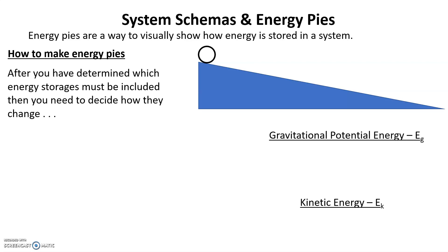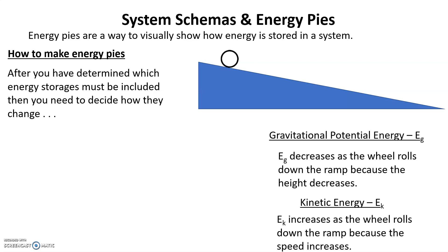After we determine which energy storages must be included, then we need to decide how they change. As this wheel rolls down this ramp, the E-g decreases because the height is decreasing. As the wheel rolls down the ramp, it speeds up, so the EK is going to be increasing.